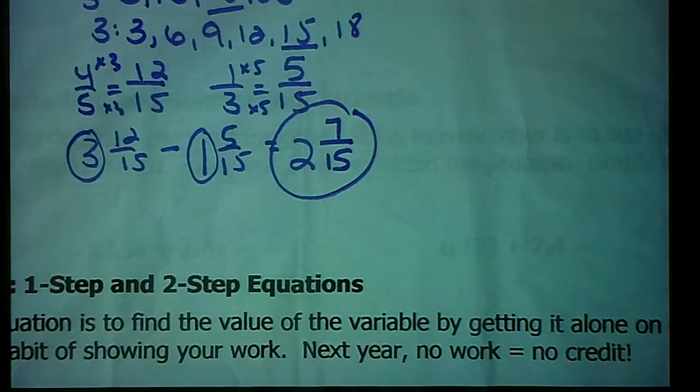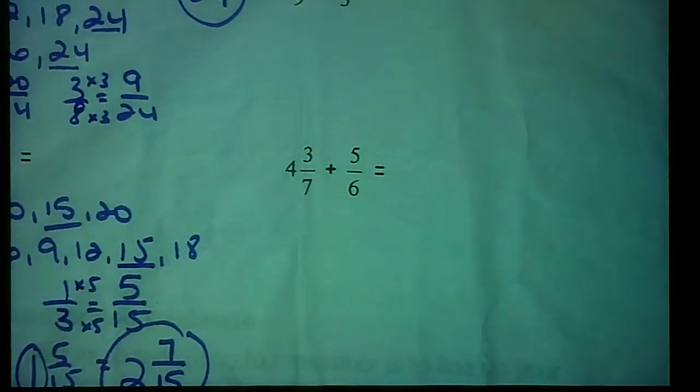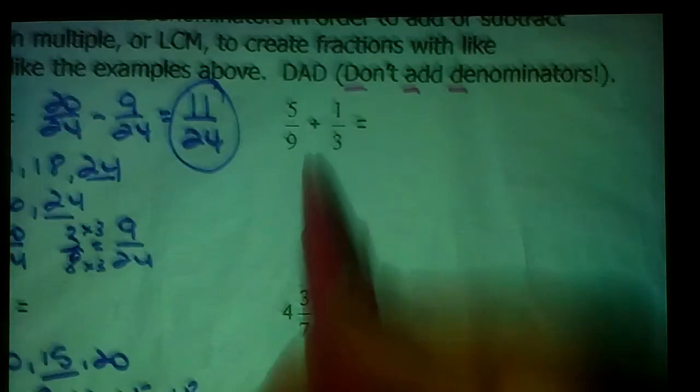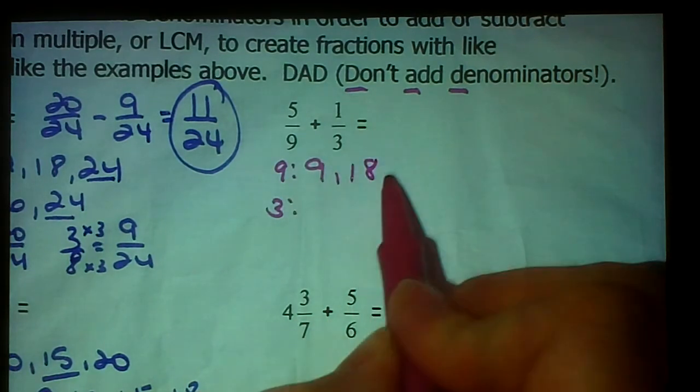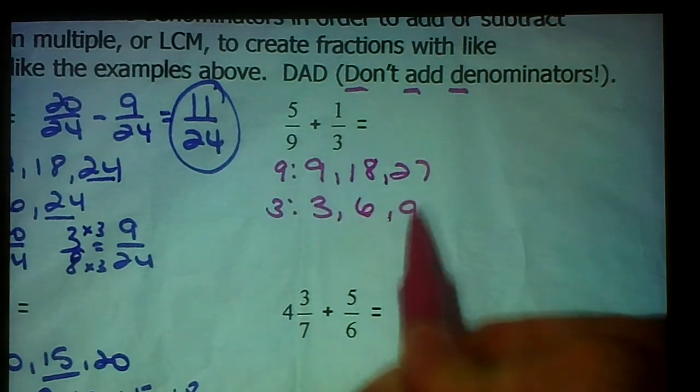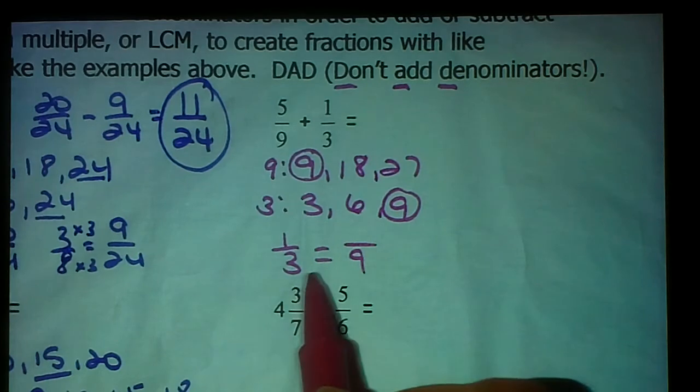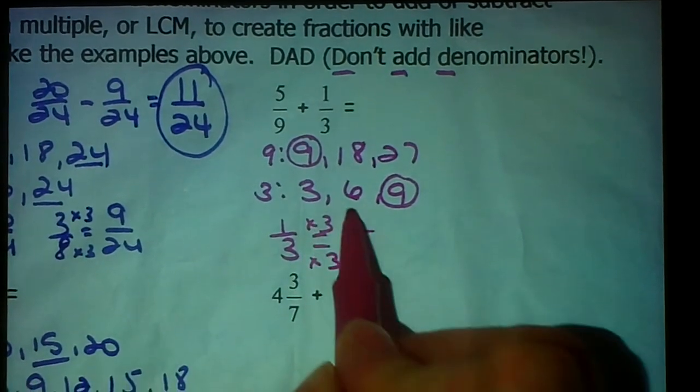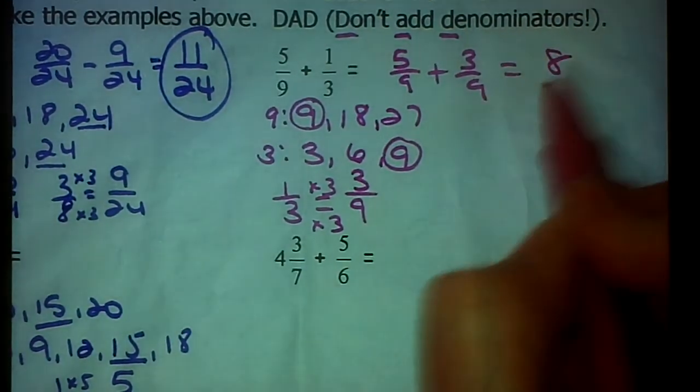Next two examples. Back to me. Alright. 5/9 plus 1/3. This might be one where some of you who are really good with your multiplication facts can identify right away that the least common multiple is glaring at you in the face right now. So if you look through your multiples of 9 and 3, what does 9 go into? 9, 18. 3 goes into all those too. But look at what happens. 3 times 3 is 1, or is 3, 6, 9. Yeah, we don't have to mess with the 5/9. We're just going to leave that alone, but we have to change 1/3 into 9ths. 3 times 3 makes 9. 1 times 3 makes 3/9. So we're really taking 5/9 plus 3/9, which is 8/9 already reduced.